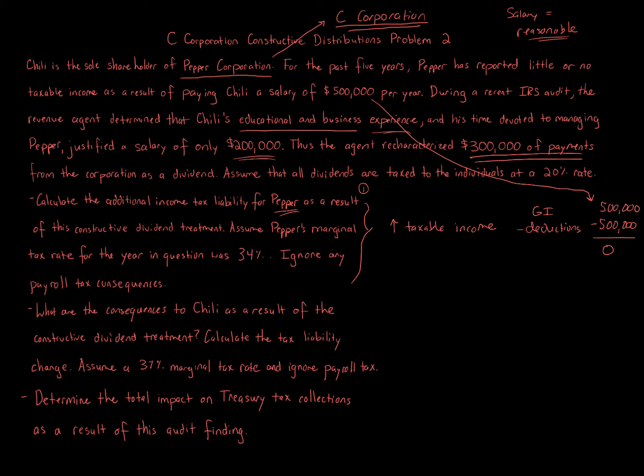If we have $500,000 gross income, $500,000 deduction, that would bring our number to zero. The IRS is coming in and saying, well no, your gross income is $500,000, that's correct. But your deduction should only be—if we're lowering the salary to $200,000—you only get $200,000. And that means your taxable income is now $300,000. So your taxable income goes up by $300,000. So that's all it's asking.